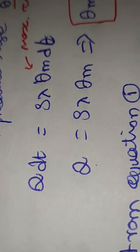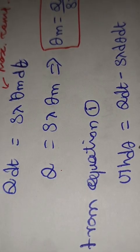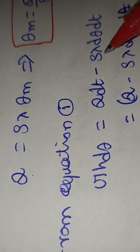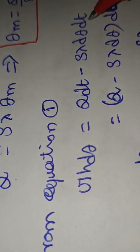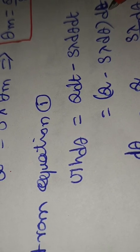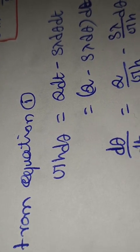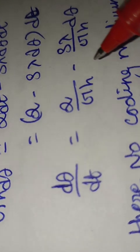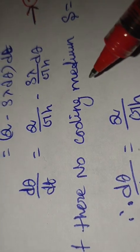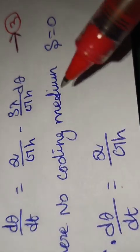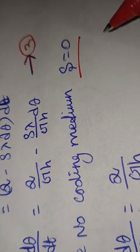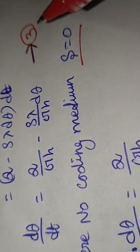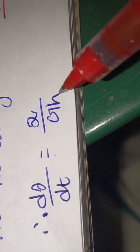From equation one, rearranging again: G·H·dθ = Q·dt − S·λ·θ·dt. Taking dt as a common factor and dividing through gives: dθ/dt = Q/(G·H) − (S·λ)/(G·H)·θ. If there is no cooling medium in the machine, S is considered zero, and substituting S = 0 in this equation three gives: dθ/dt = Q/(G·H).